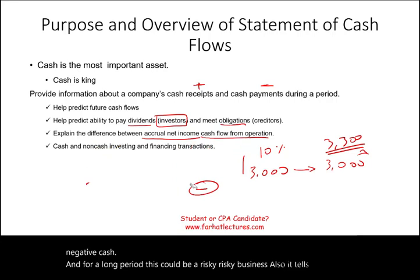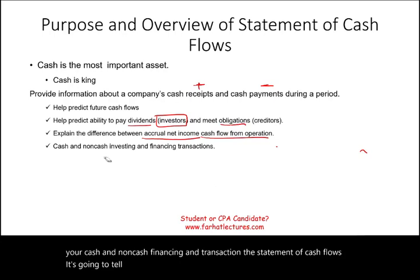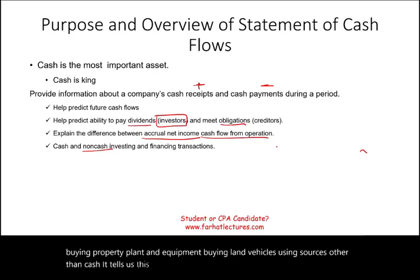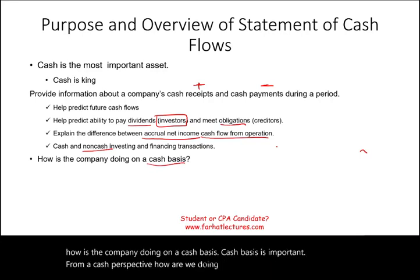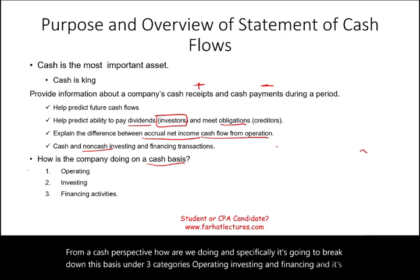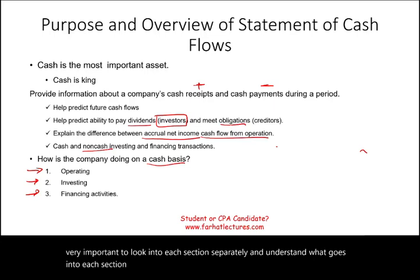The statement of cash flows also tells you about your cash and non-cash financing transactions — for example, buying property, plant, and equipment using sources other than cash. Simply put, it tells us how the company is doing on a cash basis. Specifically, it breaks down this basis under three categories: operating, investing, and financing. It's very important to look into each section separately and understand what goes into each, because those are the three sections of the statement of cash flows.